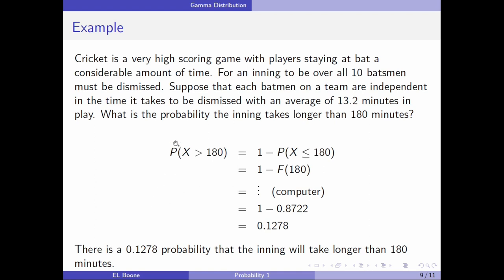Suppose we're interested in the probability that an inning takes longer than 180 minutes. This is P(X > 180), which equals 1 - P(X ≤ 180) = 1 - F(180). The CDF goes the other direction, so we use this complement trick. We have 1 - F(180), and the computer gives us 0.8722. So 1 - 0.8722 = 0.1278. There's a 0.1278 probability that the inning will take longer than 180 minutes.